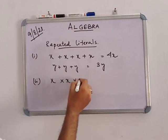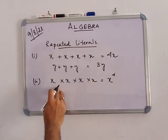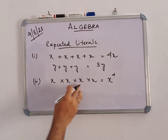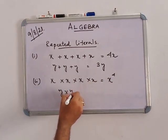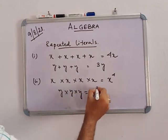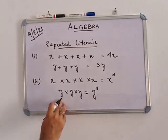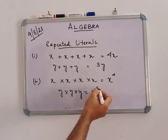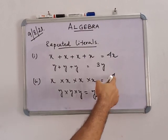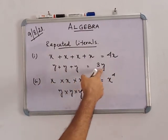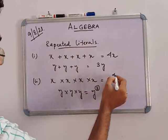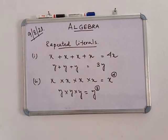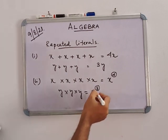But when we multiply: X into X into X into X into X, that means X to the power 4. The power of X is 4. Similarly, Y into Y into Y equals Y cubed, because there are 3 Y's. This is called the exponential form. Here, Y and X are called the base, and the number (3 or 4) is called the index or power. When multiplying the same literal repeatedly, that literal is called the base and the count is called the power.